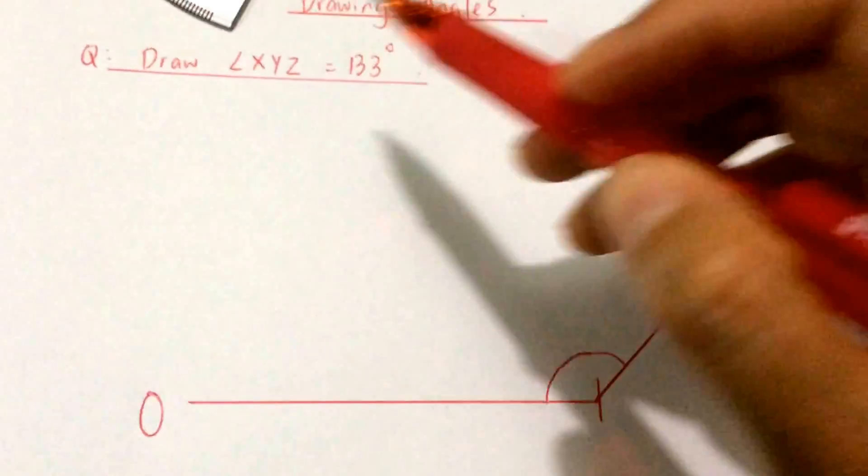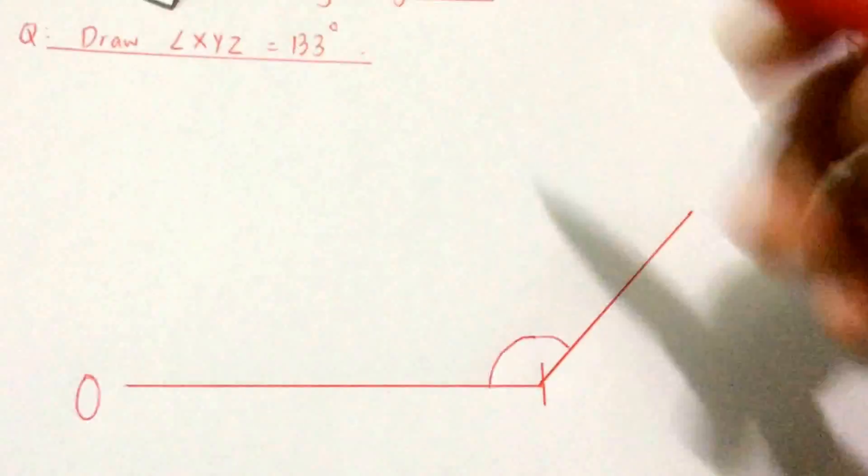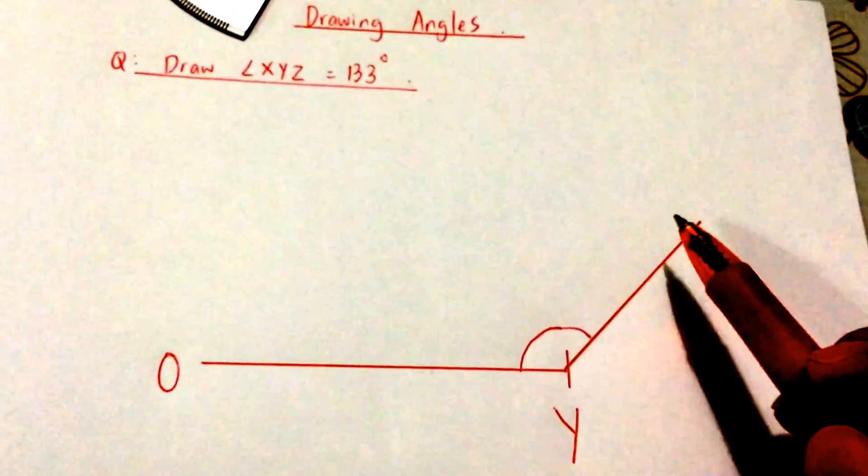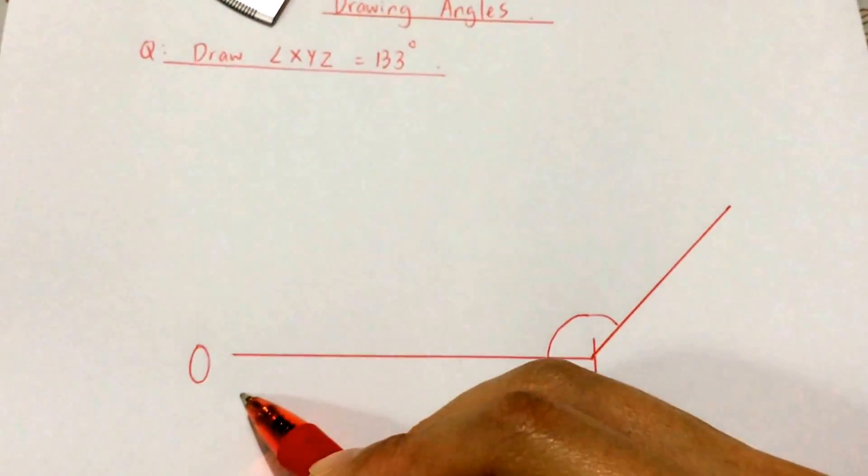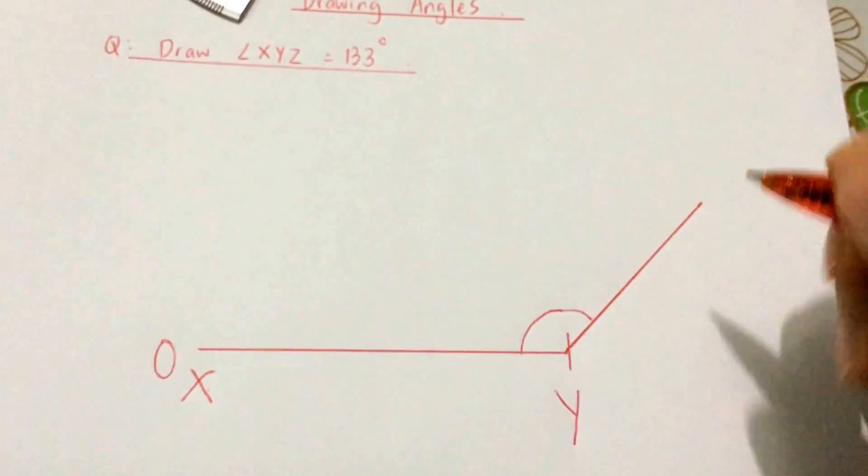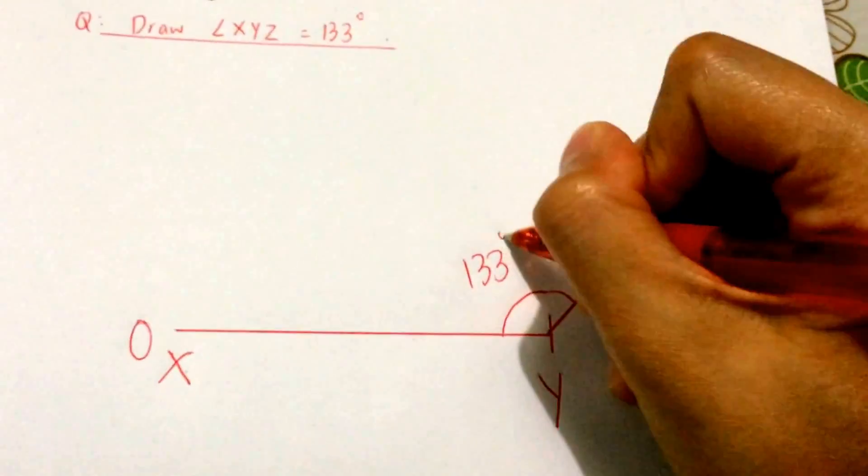Now you have to label your angle. XYZ - Y is in the center, that means Y is where the angle is. X and Z can be at either points, which means X can be here or X can be here. So angle XYZ, this is 133 degrees.